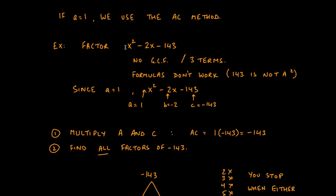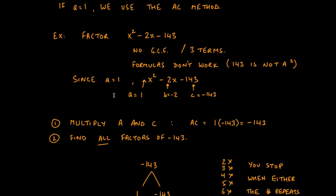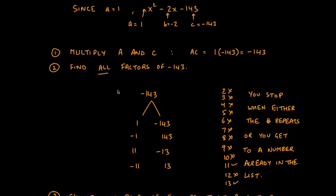However, the coefficient of x² is 1, so since a is 1 we can use the AC method. Before we start, we identify a, b, and c: a is the coefficient next to x² (always), b is the number including the sign next to x, and c is the constant. The first step of the AC method is to multiply a and c — hence the name. So a × c = 1 × (-143) = -143.